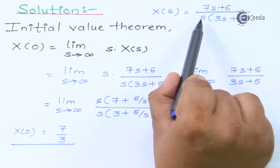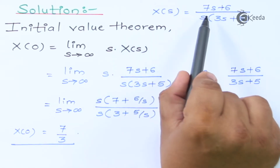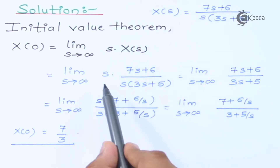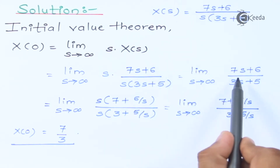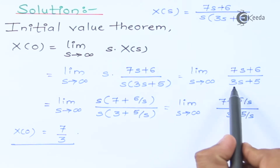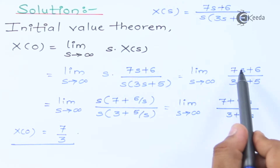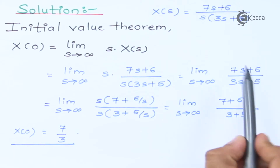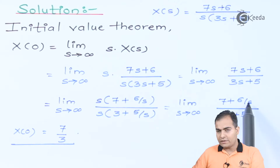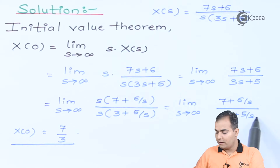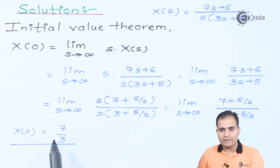To summarize the initial value process: in the initial value theorem there is already an extra s multiplied, so we cancel it with the s in X(s). After that, since the power of s in numerator and denominator are the same, we take s common and cancel. After cancelling, terms like 1/infinity become zero, leaving only the integer coefficients as the result.